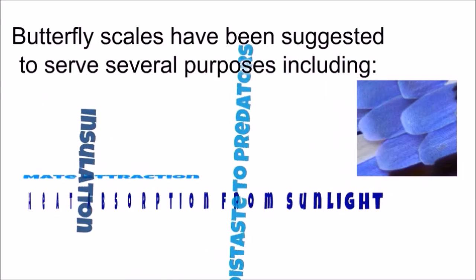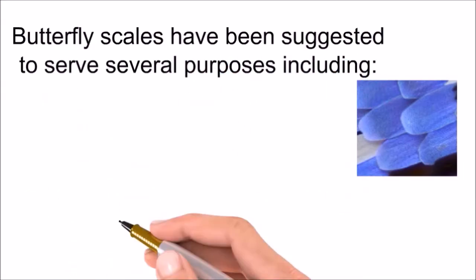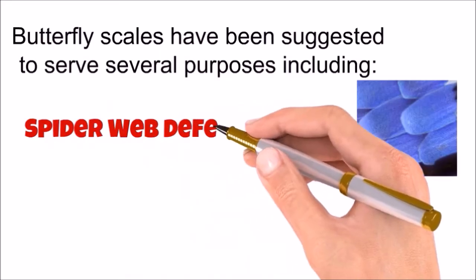Since butterfly wing scales can be easily rubbed off, it's logical to hypothesize that they provide some defense from sticking to a spider's web.